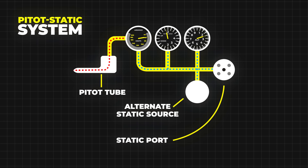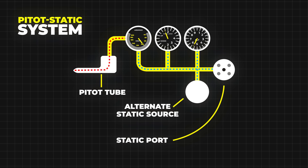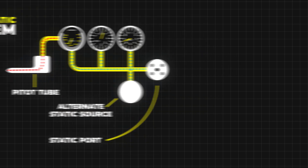The pitot-static system plays a pivotal role in flight instrumentation. By comparing the total pressure from the pitot tube with the static pressure from the static port, onboard instruments like the airspeed indicator, altimeter, and vertical speed indicator provide accurate readings of airspeed, altitude, and climb-descent rates.